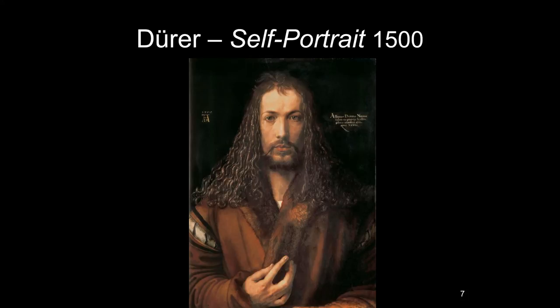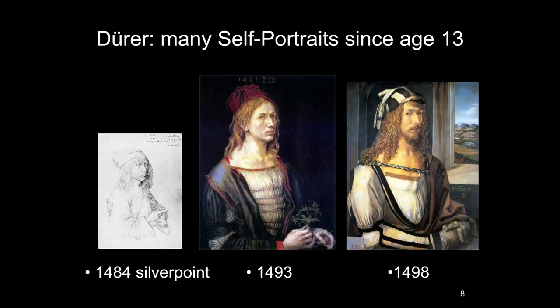To put the 1500 self-portrait in context, Dürer did a number of self-portraits. The earliest work we have by him is a self-portrait drawn — not painted — when he was 13 years old, from 1484, in silverpoint. Silverpoint is a technique using specially coated paper on which you draw with a stylus that has a silver tip. There's a chemical reaction with the coating — the silver oxidizes, creating very fine lines. It's quite tricky; it's not something an unskilled person could do.